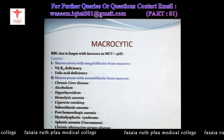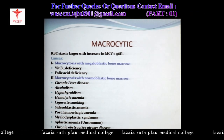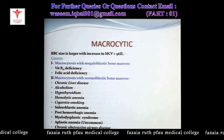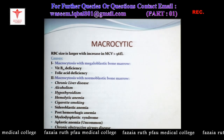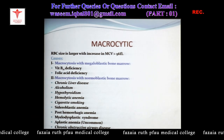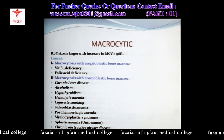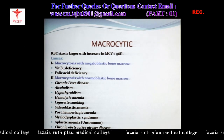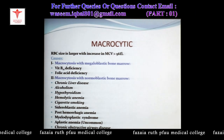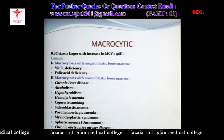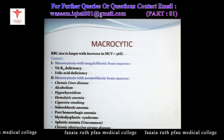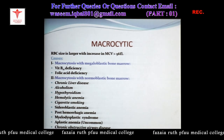Vitamin B12 and folic acid are needed for DNA synthesis within developing cells, including erythroblast precursors of red cells. When there is deficiency of B12 or folic acid, DNA synthesis is defective or delayed, producing immature red cell precursors called megaloblasts. These tend to die early within the bone marrow causing anemia, and those that reach maturity are abnormal macrocytic cells.